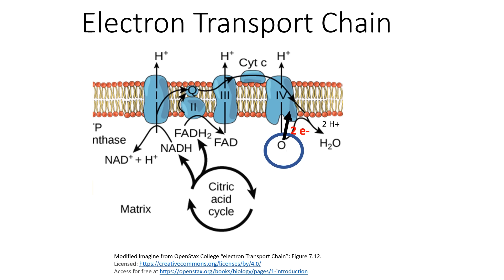Now this oxygen atom has two extra negatively charged electrons, giving it a negative charge. What it can do now is combine with two hydrogen ions, which each have a positive charge, and this creates one molecule of water, which is the primary byproduct of the electron transport chain.